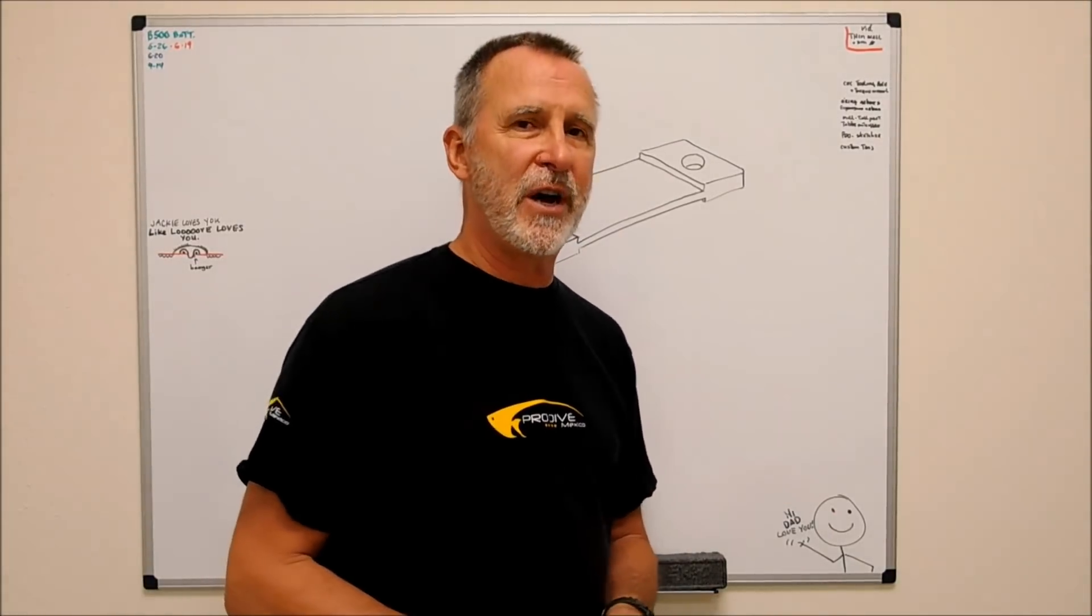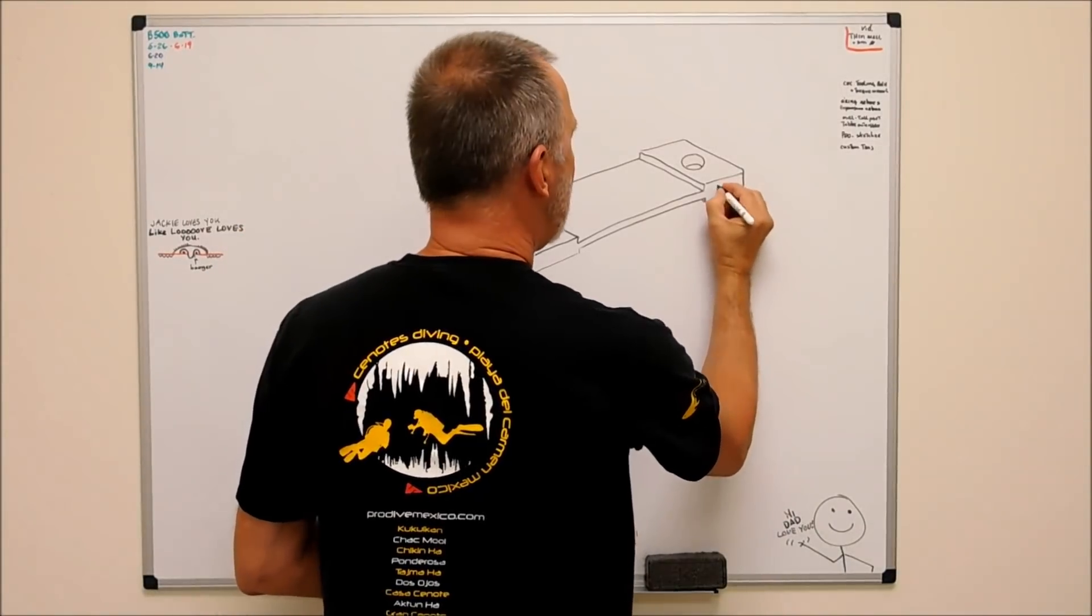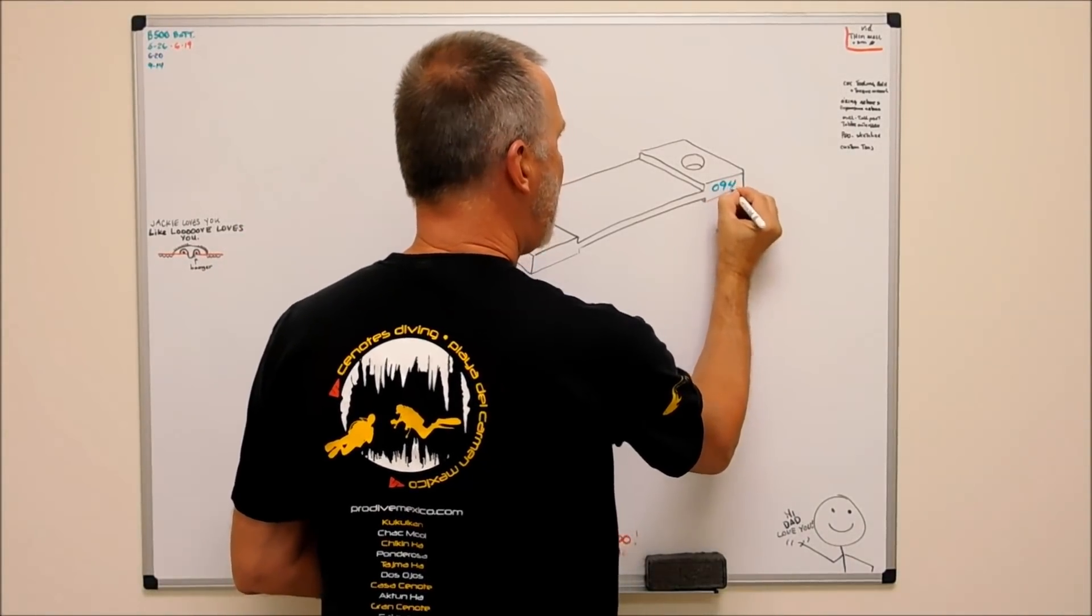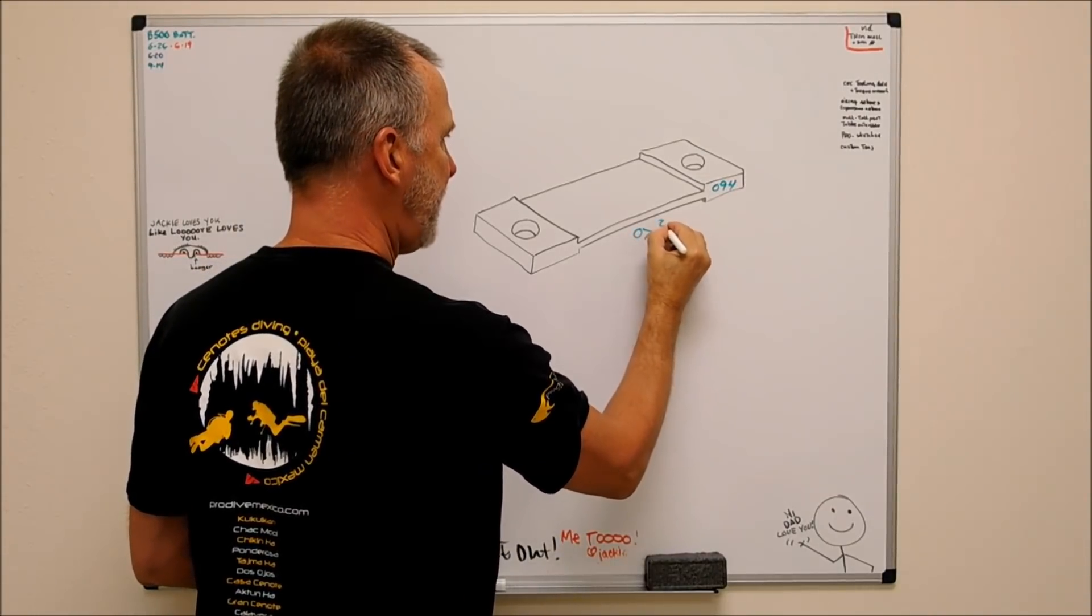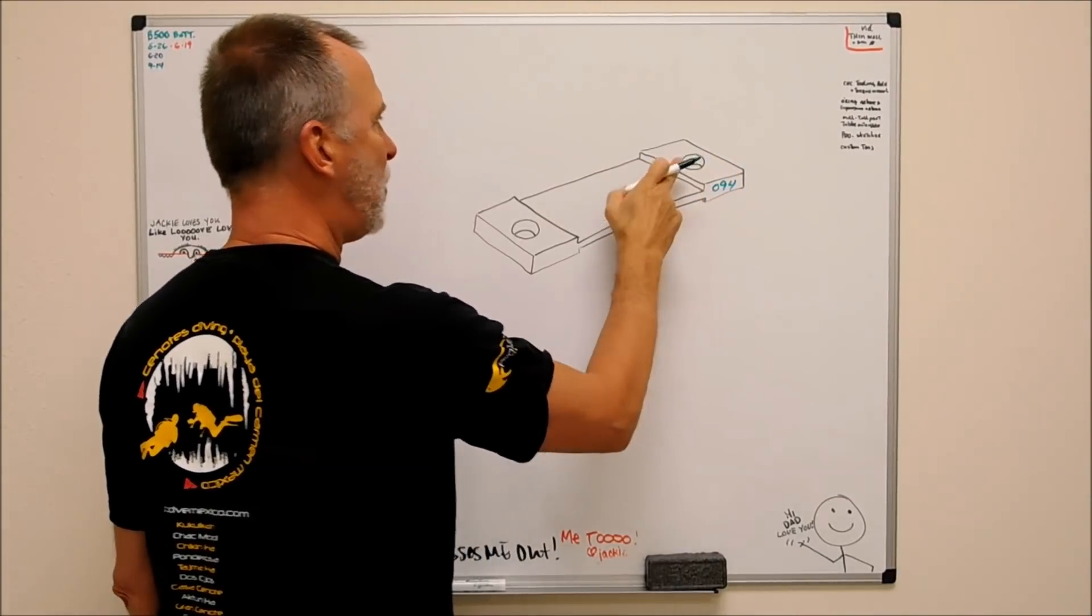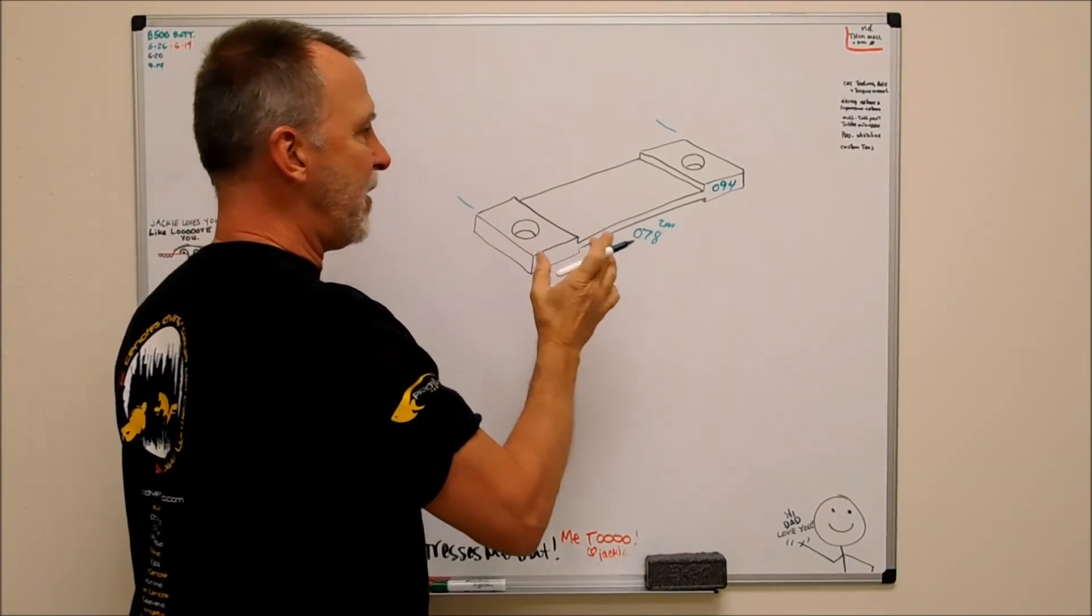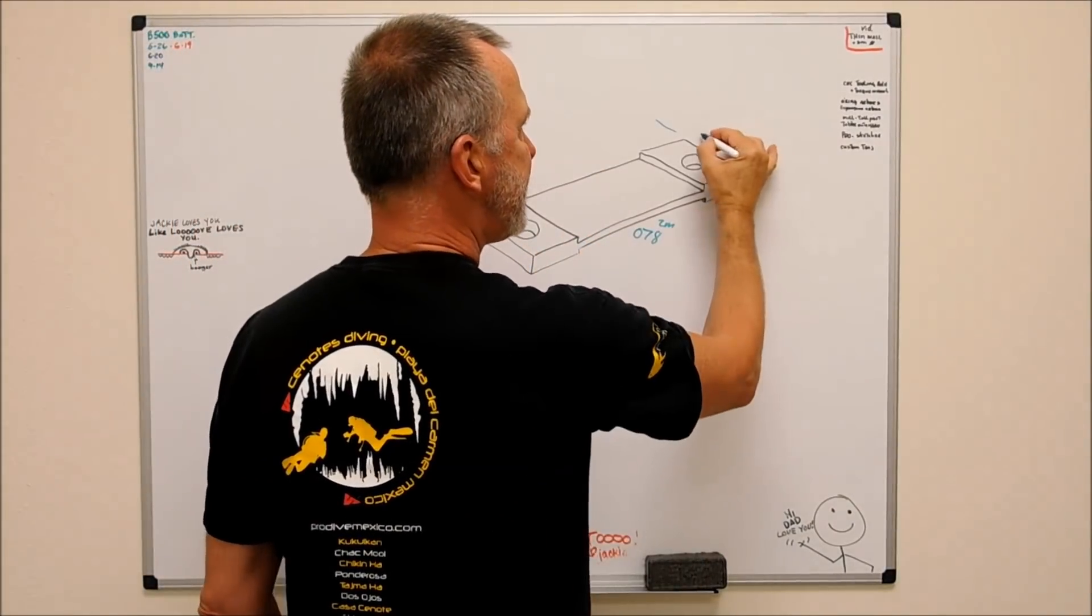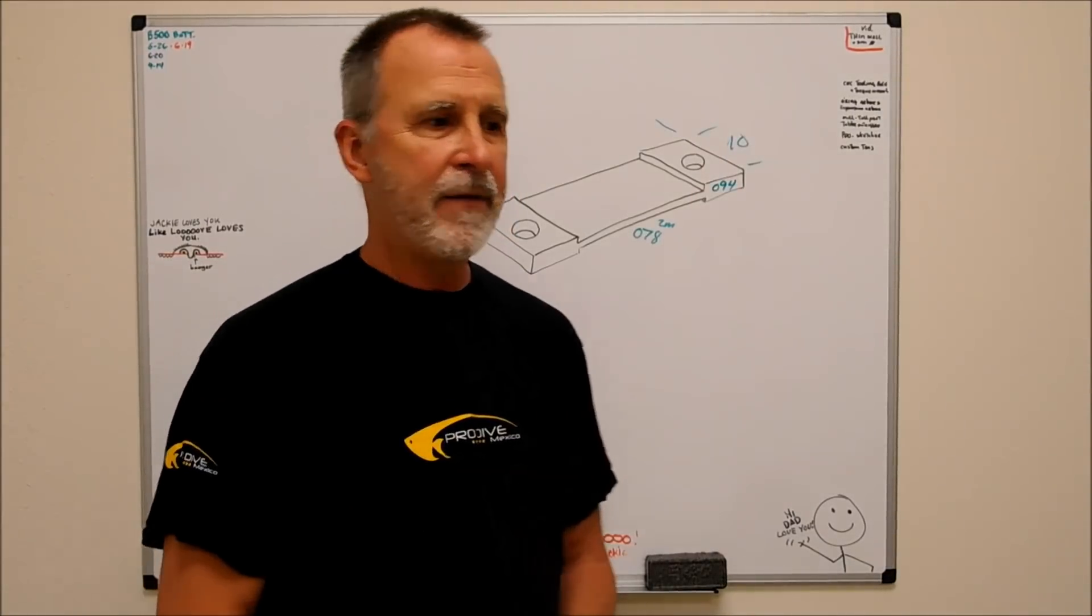Let me put some dimensions on this thing to show you how small this is. This is .094 thick here, this is .078 here, so that's two millimeters in the middle. These are three millimeter diameter holes. The whole thing is just about an inch long, so it's not very big, and it's 10 millimeters wide here. So it's not a very large part.